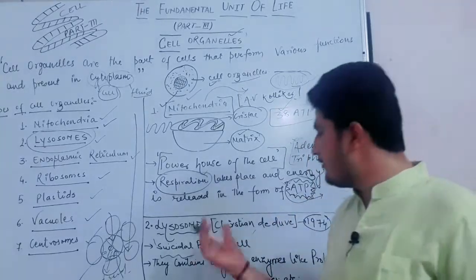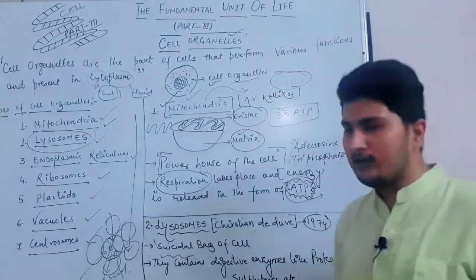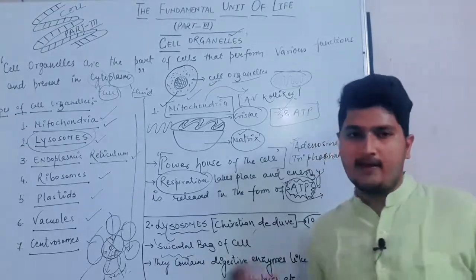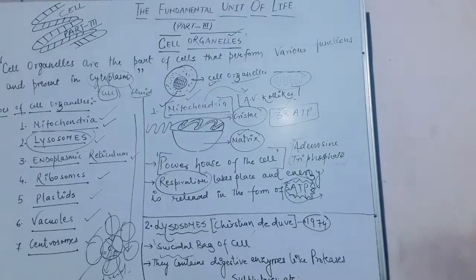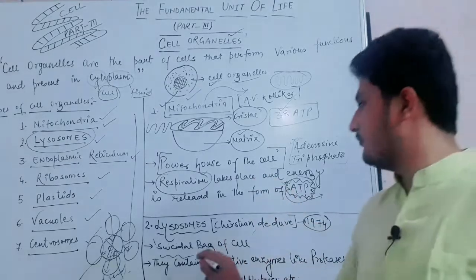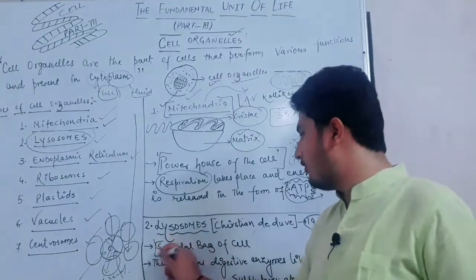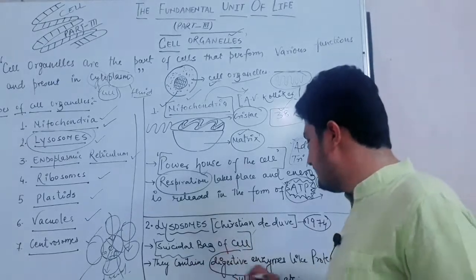Lysosomes are the suicidal bag of the cell because they digest their own cell. Suppose a cell becomes infected by foreign particles — to prevent that infection from spreading to surrounding cells, the lysosomes destroy that cell itself. Lysosomes are called the suicidal bag of the cell because they contain digestive enzymes.